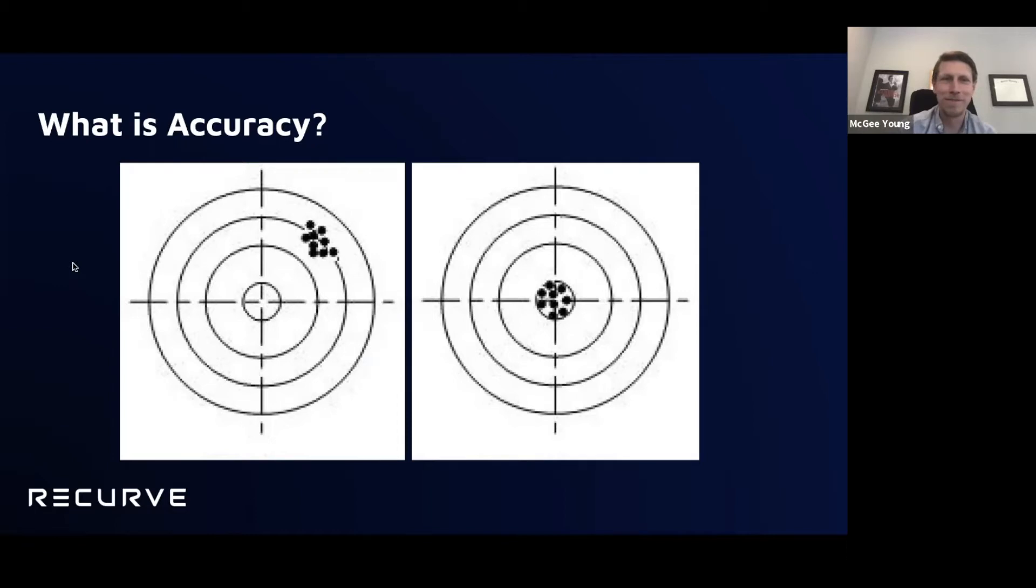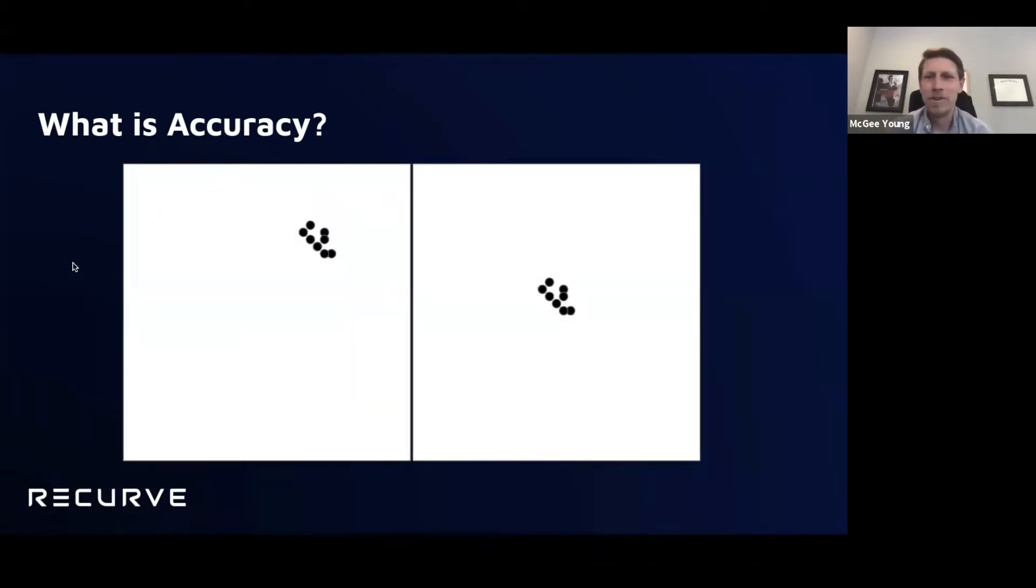Now, which one is more precise? Which of these are the dots more precise? Both same. Same. Actually, I think the ones in the bullseye are closer together. Yeah, roughly the same, but probably the bullseye slightly better. Okay. Next slide.